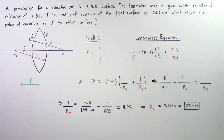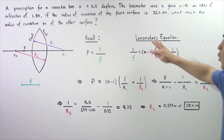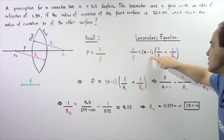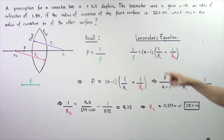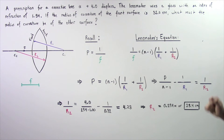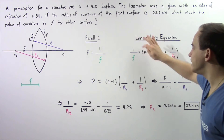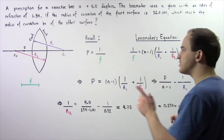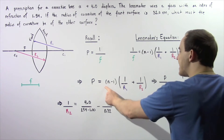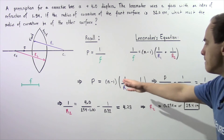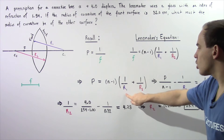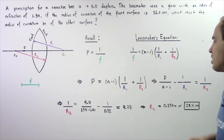Let's apply the lens maker's equation. 1 divided by the focal length is equal to N minus 1, multiplied by the quantity 1 divided by R1 plus 1 divided by R2. Since 1 divided by the focal length can be replaced by power, we have: power equals N minus 1, multiplied by 1 divided by R1 plus 1 divided by R2.